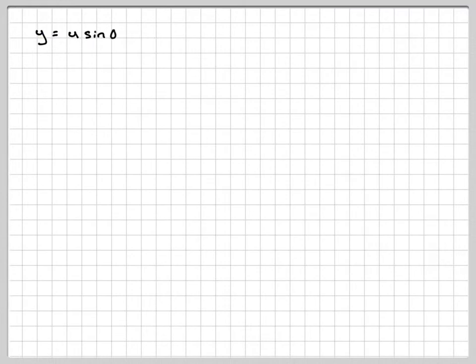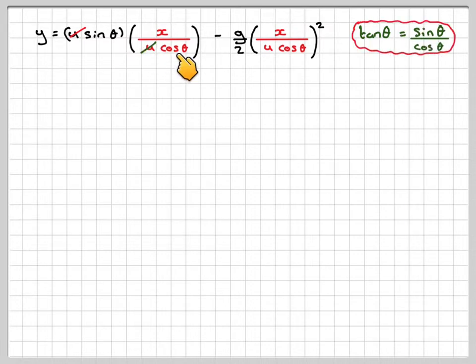Just writing that out again, I'm going to simplify this a little bit. So the u's will cancel out here, and we know that tan theta is sin theta over cos. We've got sin theta over cos theta here.